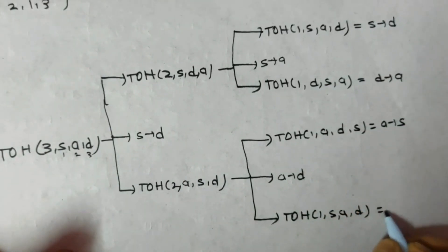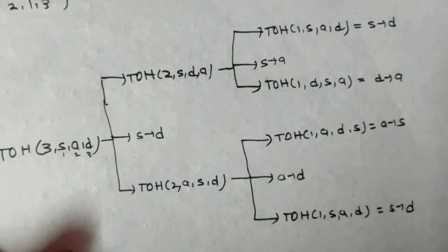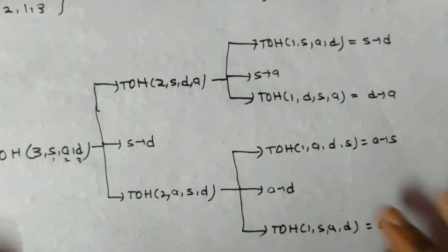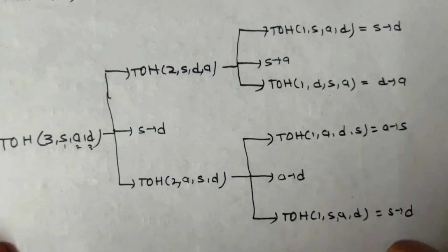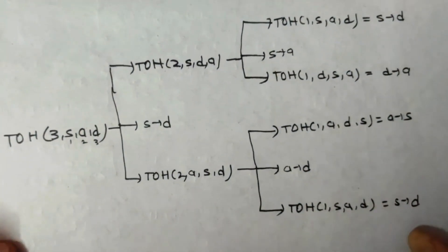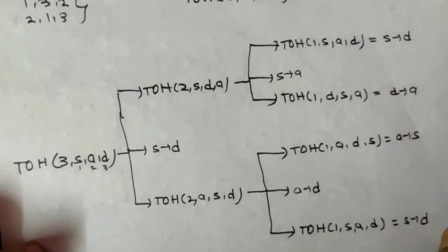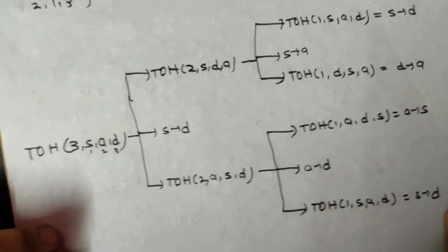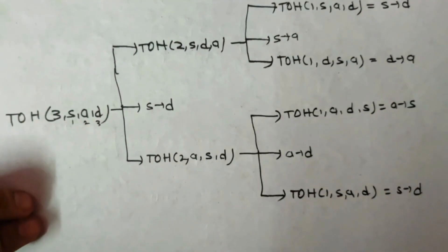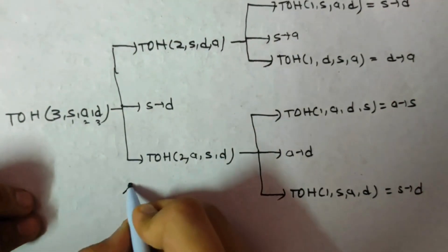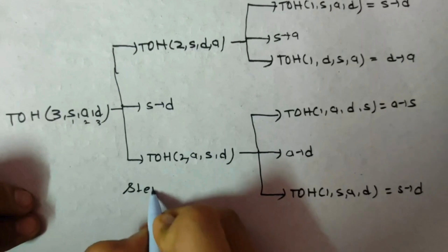We complete A-to-S and S-to-D nodes. This is the complete recursion tree for Tower of Hanoi for 3 disks. Now let's write down the steps by traversing the tree.